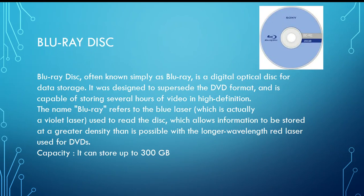Blu-ray disk is another kind of secondary storage device, often known simply as Blu-ray. It's a digital optical disk for data storage, designed to supersede the DVD format, and is capable of storing several hours of video in high definition. Its storage capacity is up to 300 gigabytes. The name Blu-ray refers to the blue laser used to read the disk, which allows information to be stored at a greater density than the longer wavelength red laser used for DVDs.